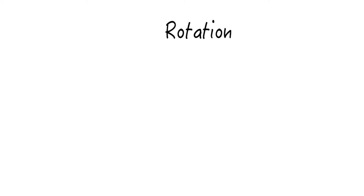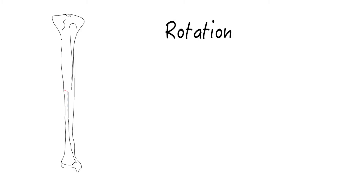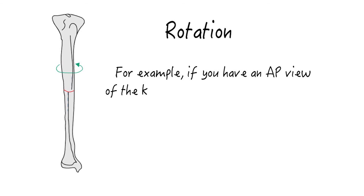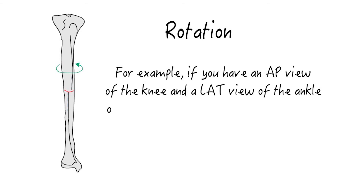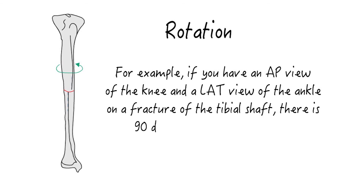Rotation usually requires inclusion of the joint above and below on the x-ray of the fractured bone. For example, if you have an AP view of the knee and a lateral view of the ankle on a fracture of the tibial shaft, there is 90 degrees of rotation present. Assessment of rotation usually requires clinical correlation as well.